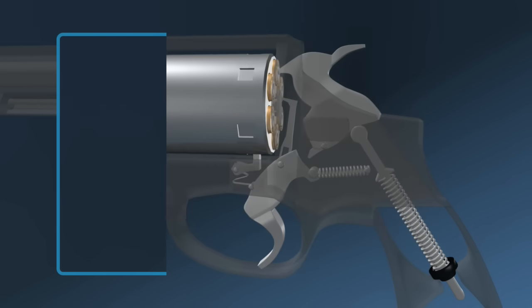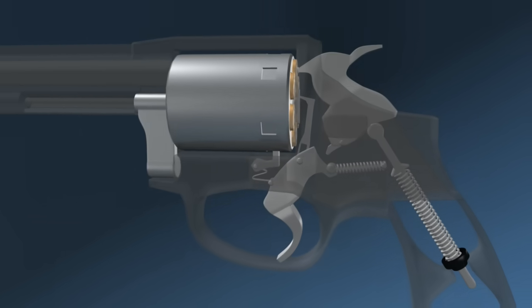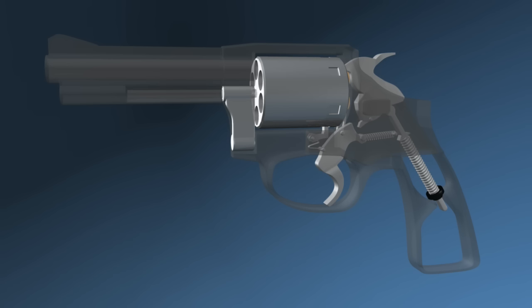The gas pressure also causes the cartridge case to expand, temporarily sealing the breach. All the expanding gas pushes forward rather than backward.